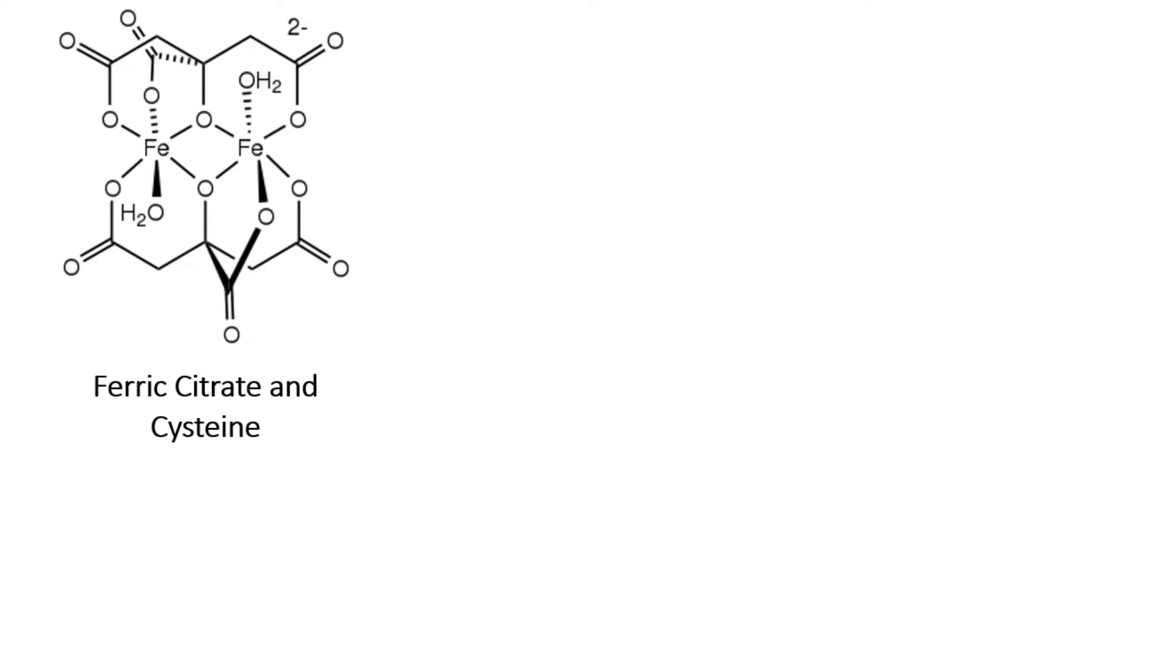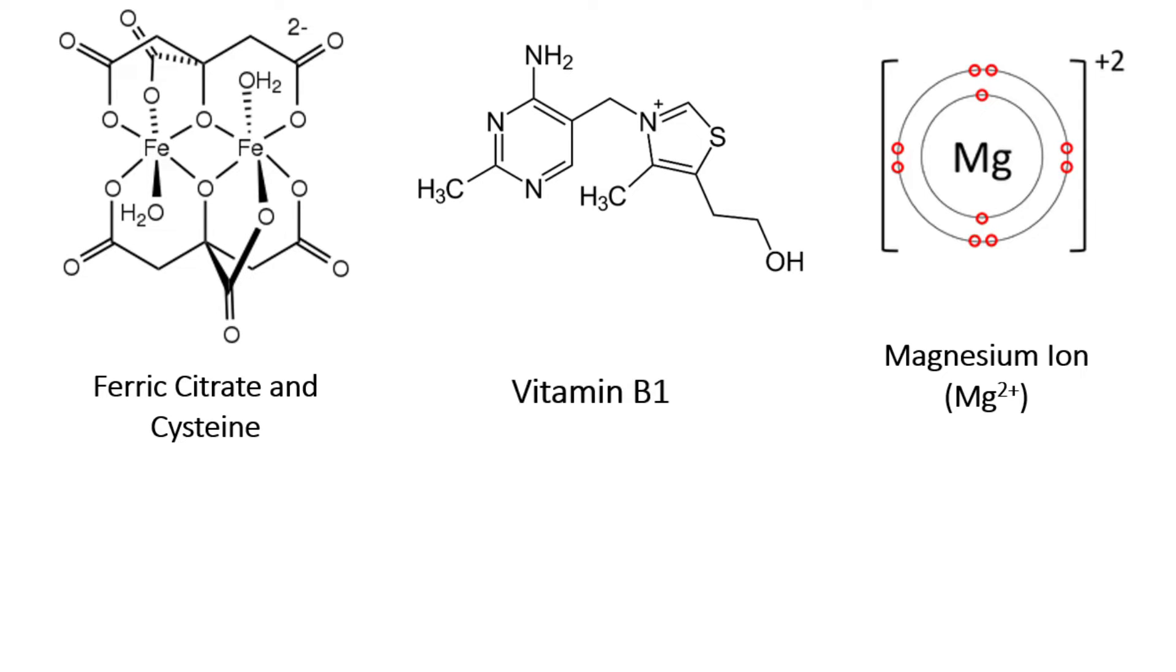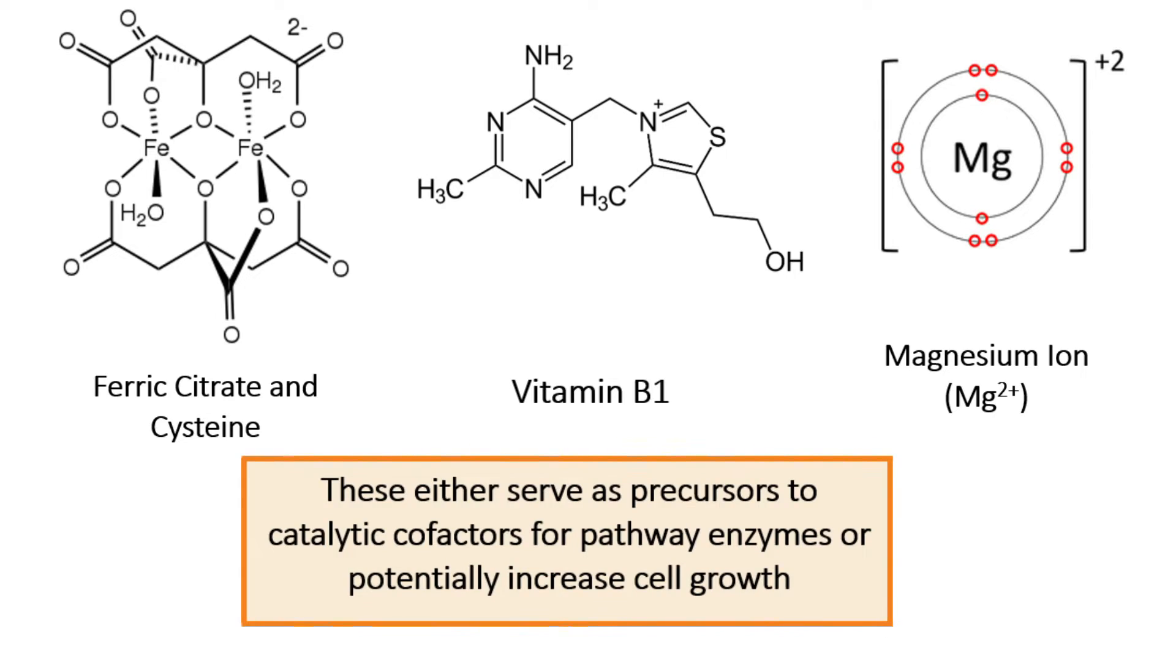Ferric citrate and cysteine, vitamin B1, and the magnesium ion. These were chosen because they either serve as precursors to catalytic cofactors for pathway enzymes or potentially increase cell growth. Altogether, there were 6 genetic factors and 3 media factors in the design.